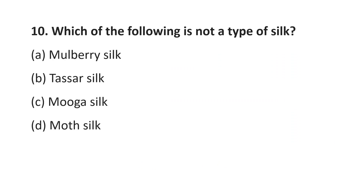Question number 10. Which of the following is not a type of silk? Option A, Mulberry silk; Option B, Tassar silk; Option C, Moga silk; Option D, Moth silk.